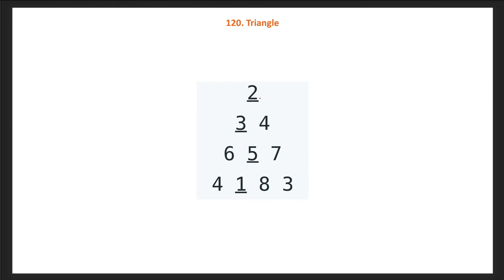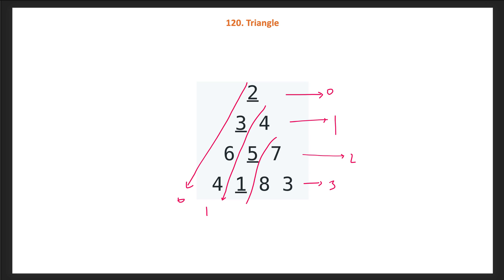Let's understand the example in more detail. We have this input forming a triangle structure. This is the 0th row, 1st row, 2nd row — I'm mentioning the index of each row. This is the 0th column of each row, then the 1st column, 2nd column, and 3rd column. We have only one possible start index at position (0, 0). From there we can go to either the 0th column or the 1st column in the next row, going downward row by row, choosing whichever column gives us the minimum path sum.